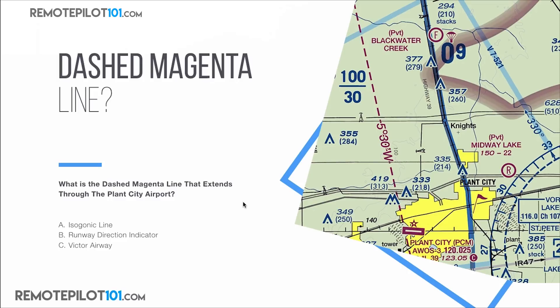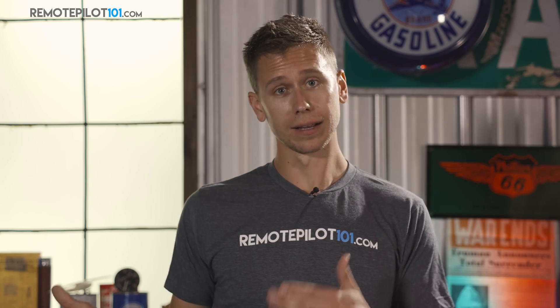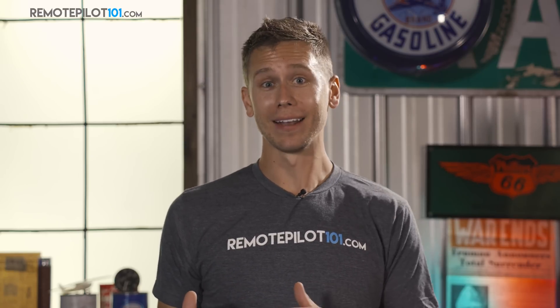Users of RemotePilot101.com know this — it's an isogonic line. We use this to tell the difference between magnetic and true north when planning cross-country flights when studying to become a manned pilot. In this case it's only five degrees, so it's not that significant, but look at it in Washington State or Alaska — there's a big difference between true and magnetic north.